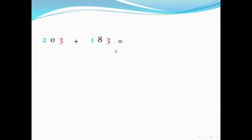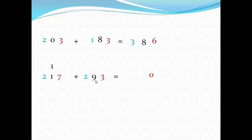Three digits plus three digits in the horizontal method: start from units — three plus three equals six; zero plus eight equals eight; two plus one equals three. Then seven plus three equals ten — write zero and carry one. One plus one plus nine equals eleven — write one and carry one. One plus two plus two equals five. I hope you now understand our video — see you soon, bye bye!